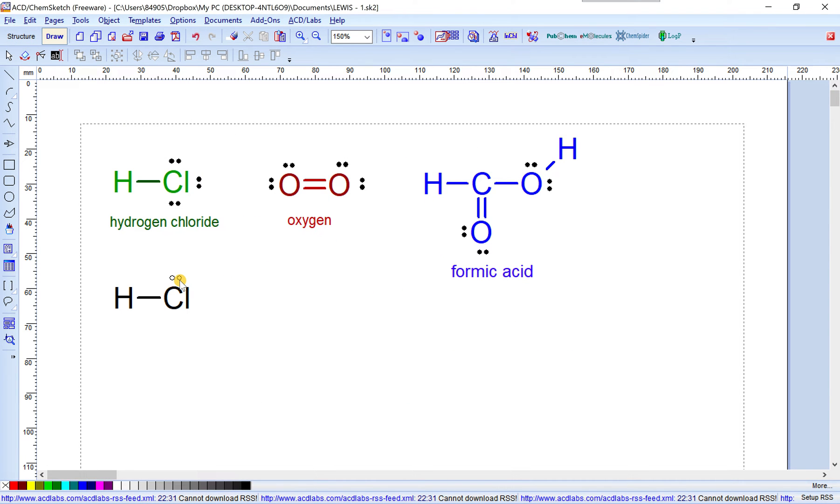Now we will continue to rotate these two electrons. This pair of electrons can be rotated by using this function: select move and rotate. Okay, first choose the electron pair we want to rotate.